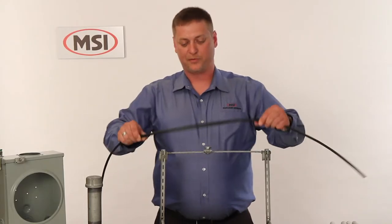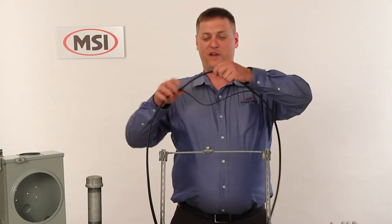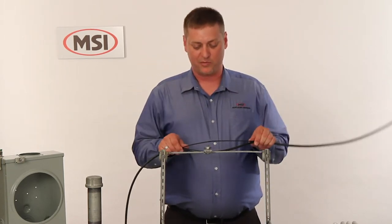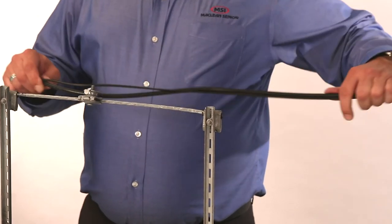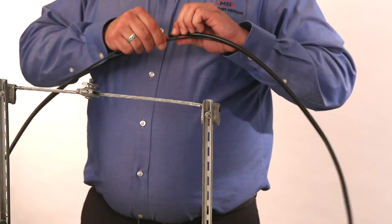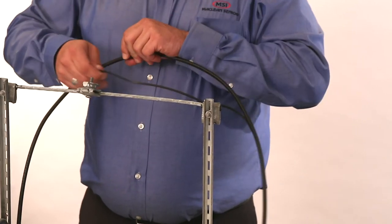Once you've separated the messenger from the cable, make sure that from your center point—where you pulled the cable up and slacked it above telephone—you have about five to six inches of separated messenger to either side of center.